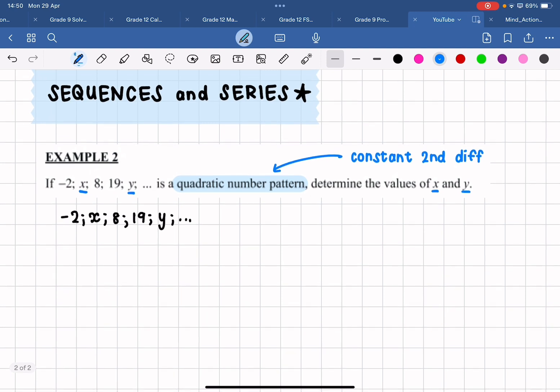Now what I'm going to do first is I am going to express all of the differences between these terms because, like we said before, we know that this number pattern has to have a constant second difference. So that second difference has to be equal to that second difference and has to be equal to that second difference.